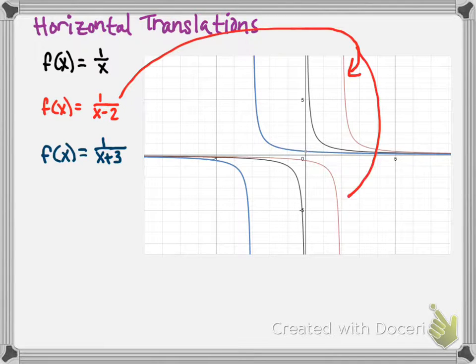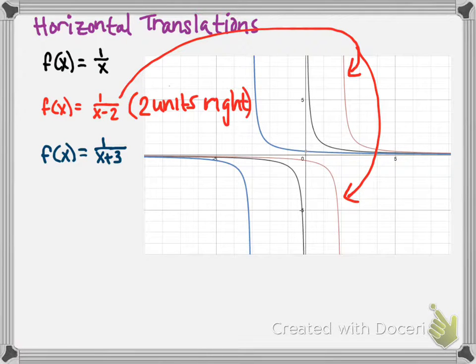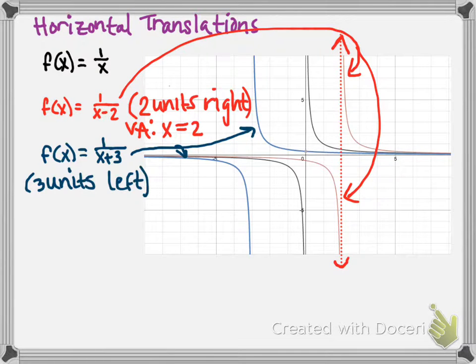1 over x minus 2 is the red graph, translated 2 units right. Consequently, our vertical asymptote is also translated 2 units right, and that's at x equals 2. 1 over x plus 3 is the blue function, which is 3 units left. Our vertical asymptote goes 3 units left to x equals negative 3.